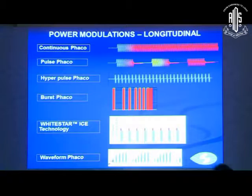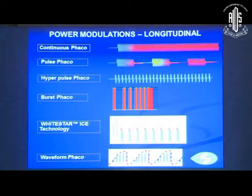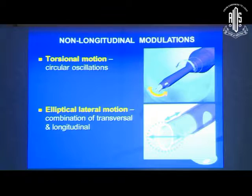First, about power modulation. We have all been through continuous and pulse modes, which have already been discussed. The new power modulations are the two non-longitudinal types: torsional, which is a circular oscillation, and elliptical, which is a combination of transversal and longitudinal.